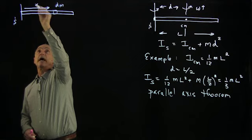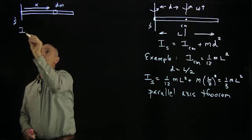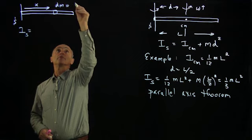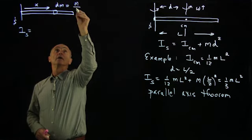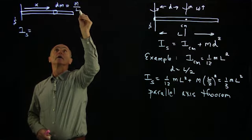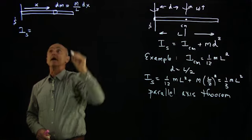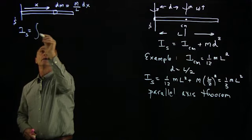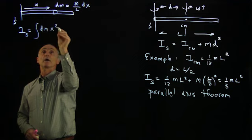and we have a distance x, then the moment about s, and let's say that dm is equal to the total mass divided by the length times some little distance dx.